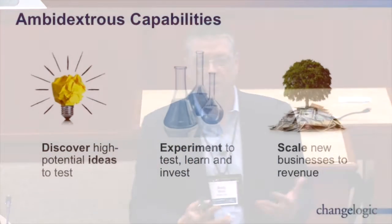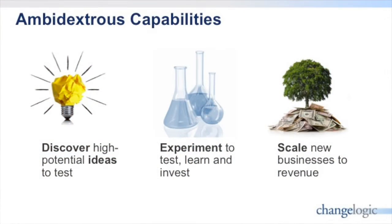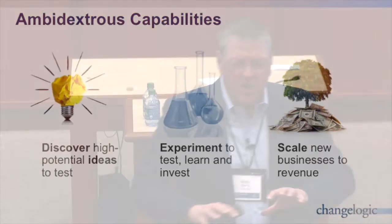The first set relates to your formal processes of innovation. You've got to discover and ideate in new areas. You've then got to experiment and incubate new business, and then scale them — whether in a network sense or a traditional sense. These are the formal innovation capabilities.